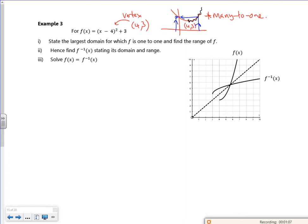So what I'm going to do is say x belongs to the real numbers such that, and I want it to start at 4. So I'm just going to take the right hand side of it. I could do the left hand side. I could do x is less than or equal to 4, but I'm going to go x is greater than or equal to 4. And that's the largest domain to make it one-to-one.